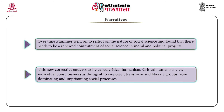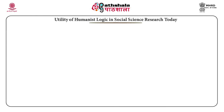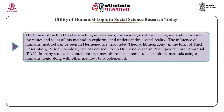Critical humanists view individual consciousness as the agent to empower, transform, and liberate groups from dominating and imprisoning social processes. The humanist method has far-reaching implications as sociologists all over recognize and incorporate the values and ideas of this method in exploring and understanding social reality. The influence of humanist method can be seen in hermeneutics, grounded theory, ethnography in the form of thick description, visual sociology, use of focused group discussions, and in participatory rural appraisal, etcetera.